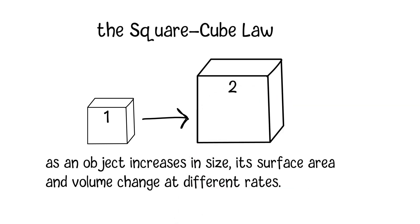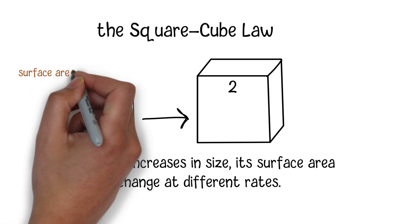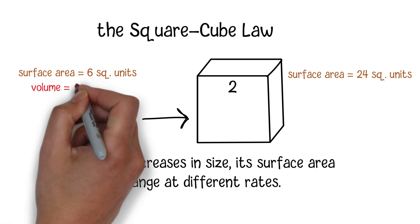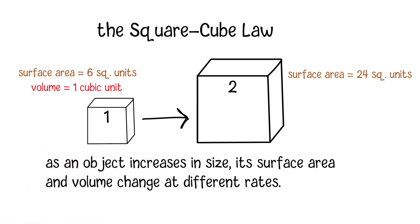Now, when we calculate the surface area and volume of these cubes, something interesting happens. The surface area of the small cube is 6 square units, while the surface area of the large cube is 24 square units. As for the volume, the small cube has a volume of 1 cubic unit, while the large cube has a volume of 8 cubic units.